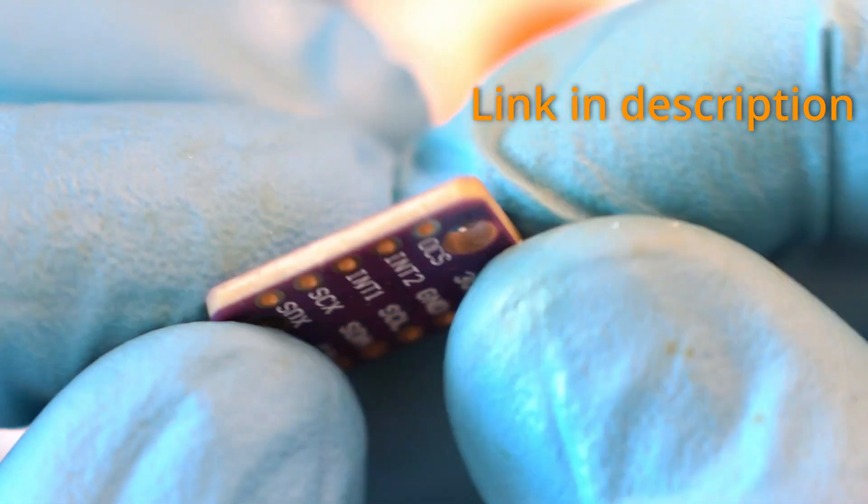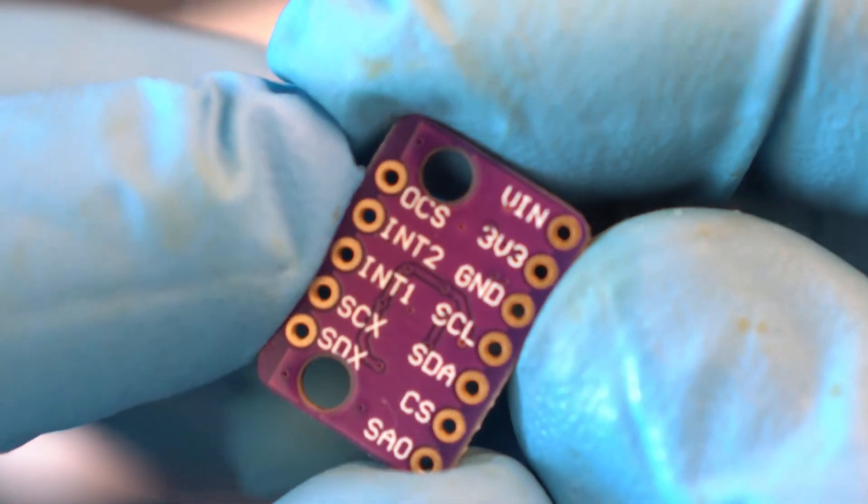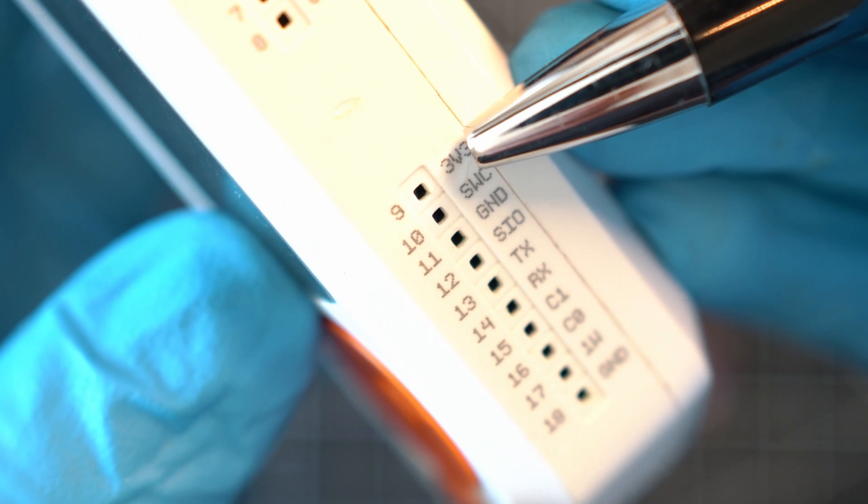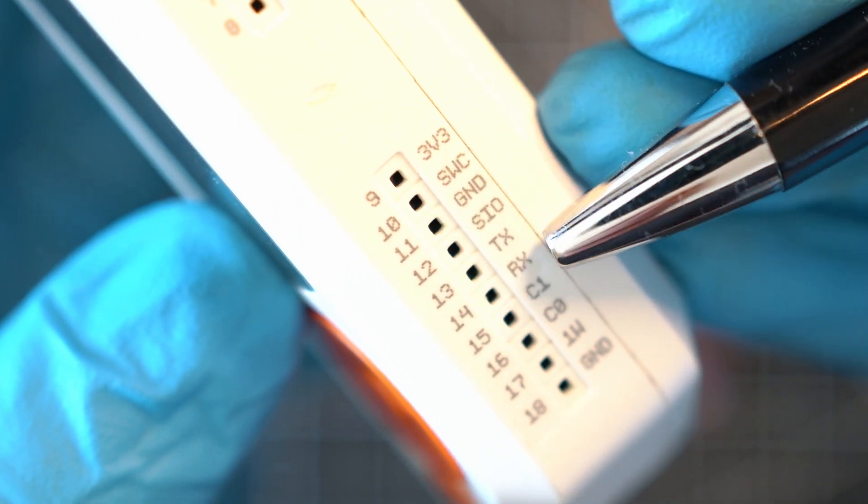And it is easy to connect, only 4 wires: 3V, GND, SCL and SDA. They go to 3V, GND, C1 and C0 on Flipper Zero.